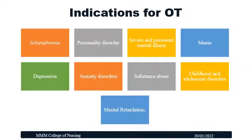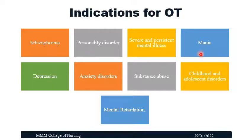The indications for occupational therapy in mental health include patients suffering with schizophrenia, personality disorder, severe and persistent mental illness, patients with mania, depression, anxiety disorders, clients with substance abuse, childhood and adolescent disorders, and children with mental deterioration.